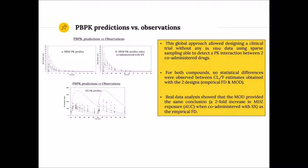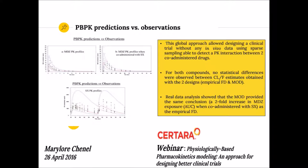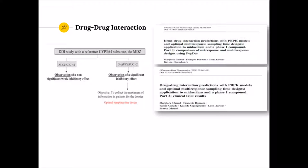This global approach, including PBPK simulation, PopPK modeling, and multi-response optimal design, allowed — without any in vivo data — the design of a clinical trial using sparse sampling, able to detect a PK interaction between two co-administered drugs. For both components, no statistical differences were observed between the apparent clearance estimates obtained with the two designs — the empirical full design and the multi-response optimal design. Bayesian analysis shows that the multi-response optimal design allowed the same conclusion — a factor 2 increase of midazolam exposure when co-administered with the perpetrator — as the empirical full design. This work was published in JPK-PD, and the approach could be of interest when a DDI study has to be performed in patients, such as in oncology, or when collecting information about potential interactions in a large trial with limited sampling.